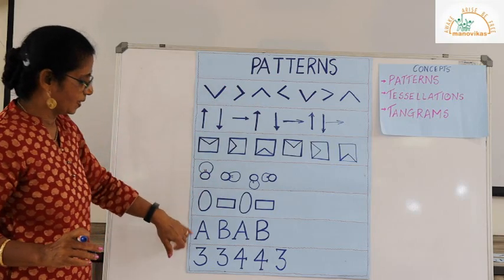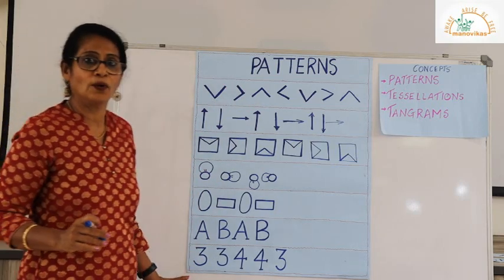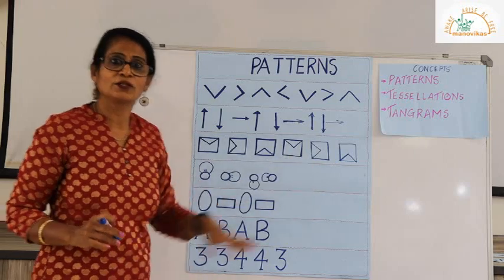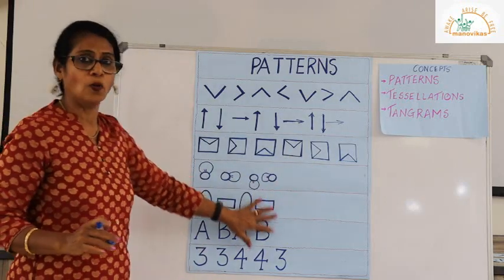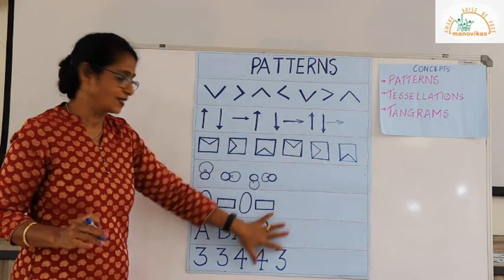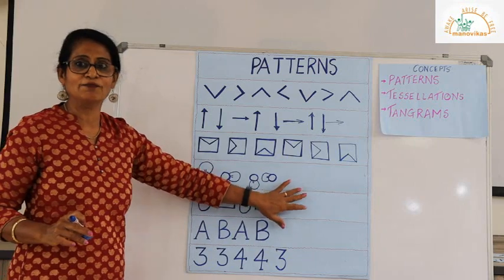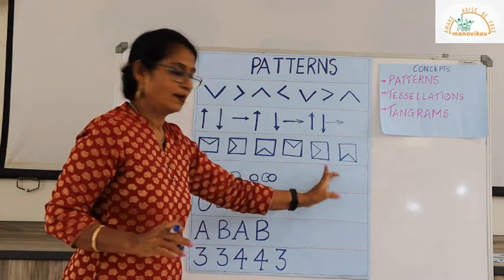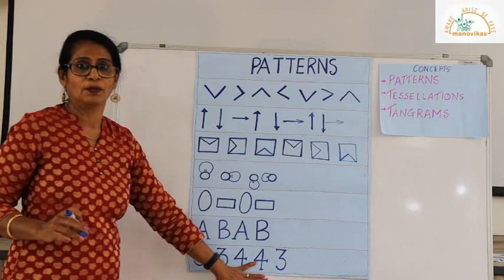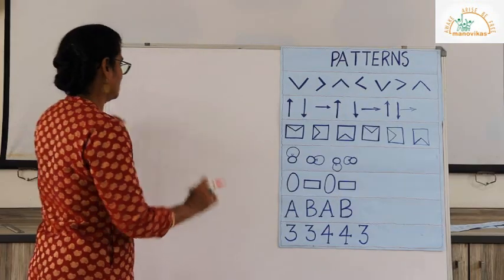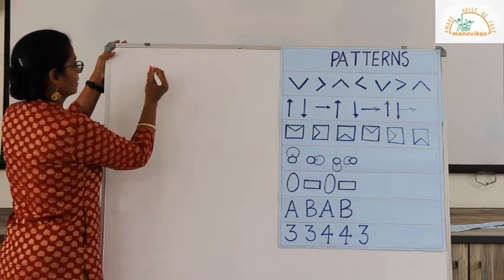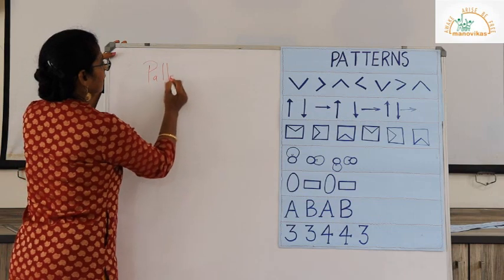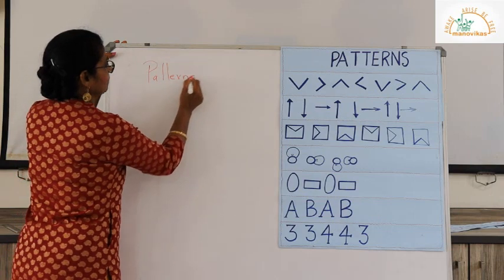One, two, three, and four are for you as an activity to be done at home. When you get time, have fun and complete by continuing the activity at home. So let's revise the patterns — growing patterns and repeated patterns.